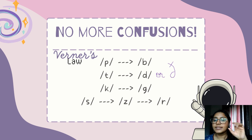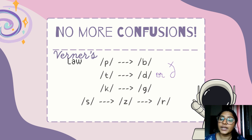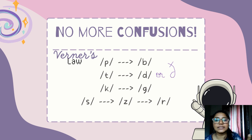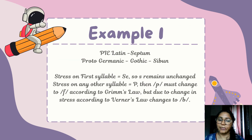Werner's Law states that the voiceless plosives under unstressed environments transform or evolve as voiced plosives in Germanic language. There is also the phenomenon of Rhoticism, where the S sound evolves as Z and later also develops as R sound in Germanic language. Let's look at one example of each.